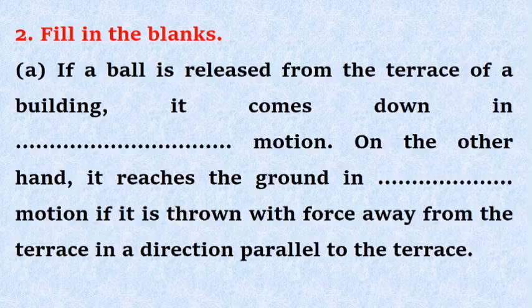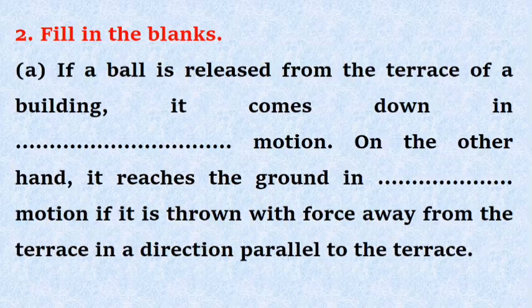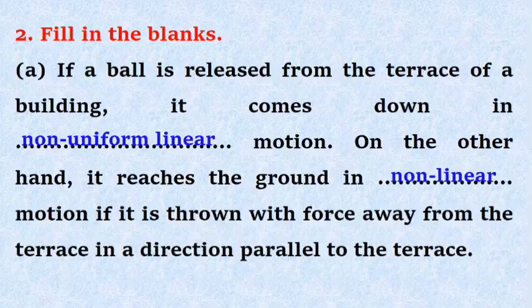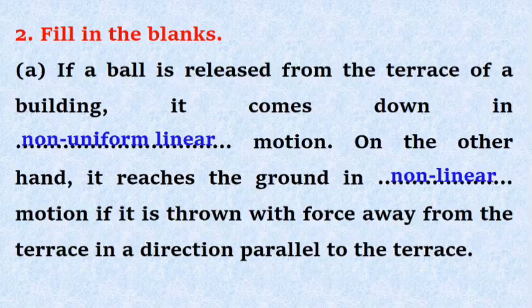Question Number 2. Fill in the blanks. A. If a ball is released from the terrace of a building, it comes down in non-uniform linear motion.